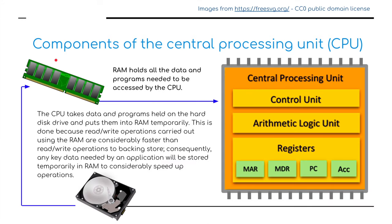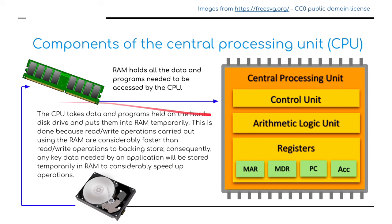The CPU takes data and programs held on the hard disk and puts them into the RAM temporarily. So if I want to run something from Microsoft Word, I find the program on the hard disk and load it into the RAM so I can work on it. This is done because read-write operations using the RAM are considerably faster than read-write operations to the hard disk — the backing store. Consequently, any key data needed by an application will be stored temporarily in RAM to considerably speed up operations.